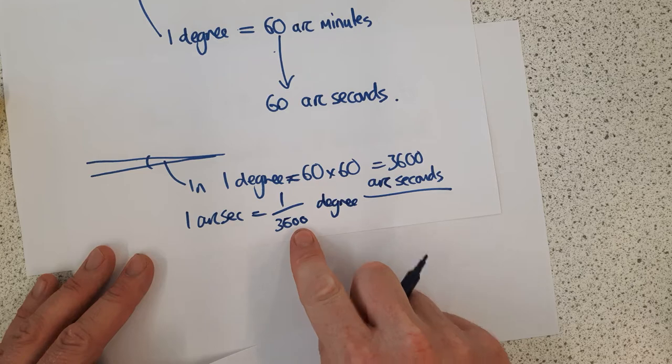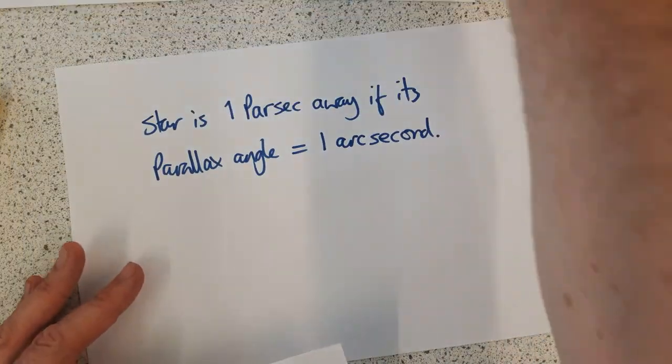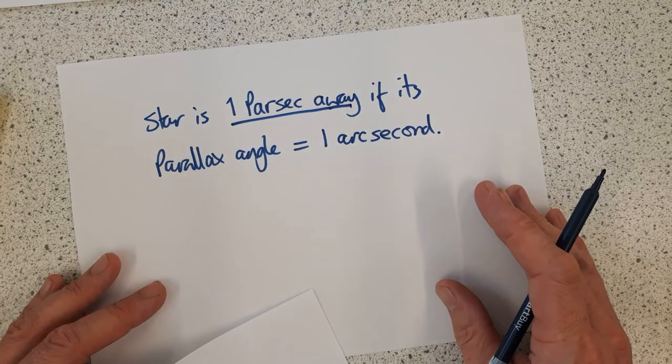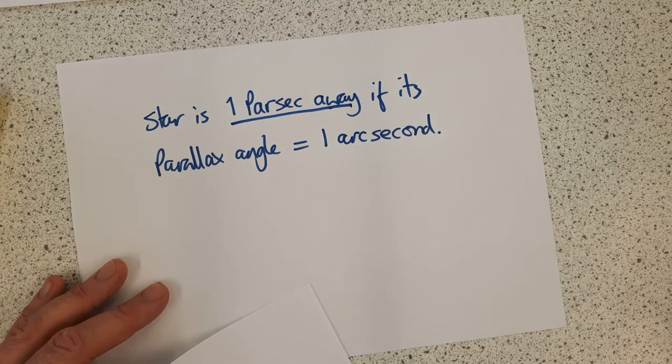If the parallax angle is that much, then the distance away that the star is is called one parsec. We introduce the idea of a parsec.